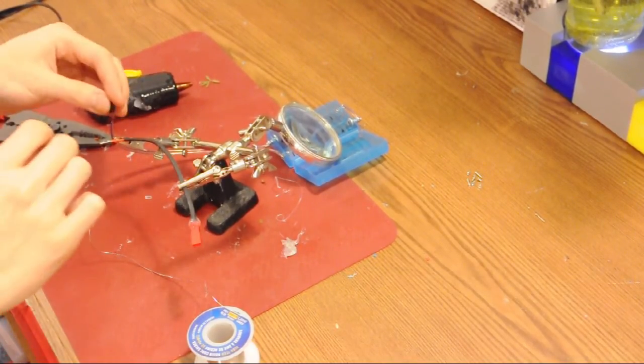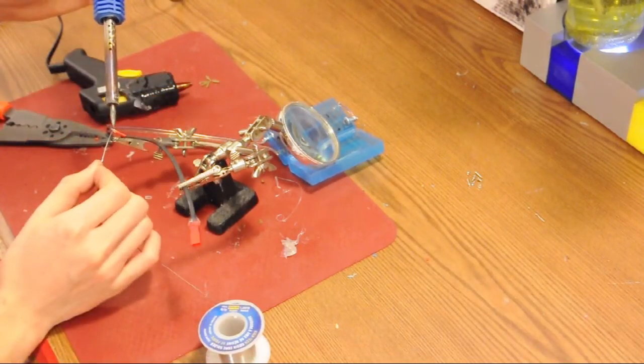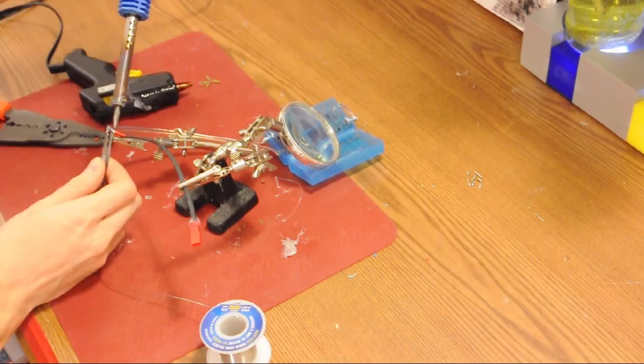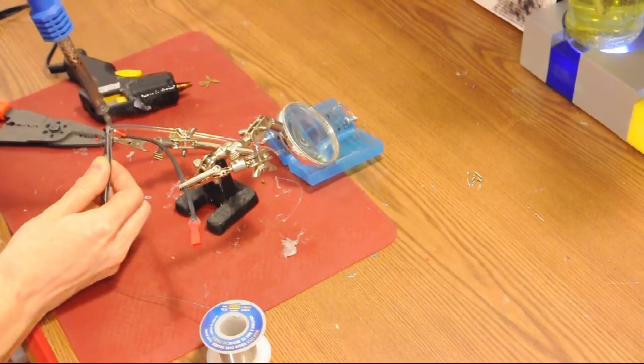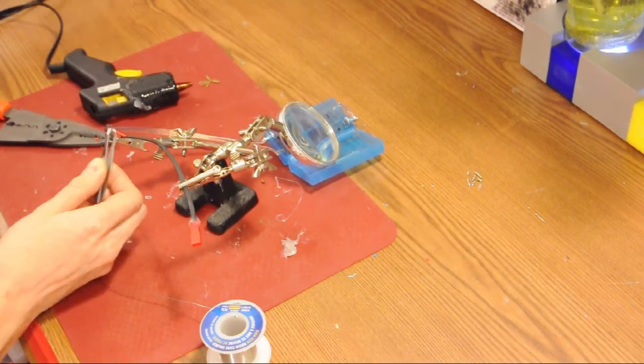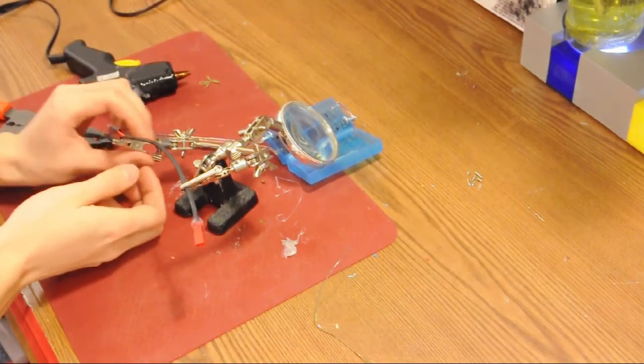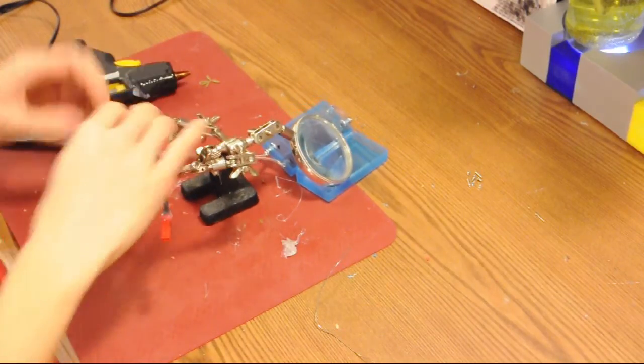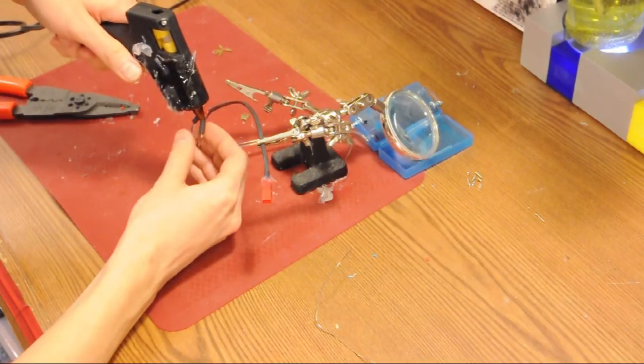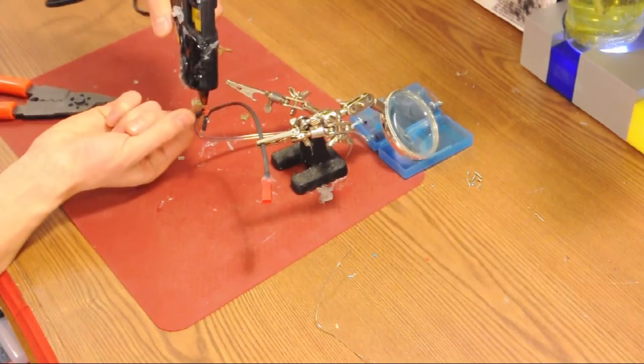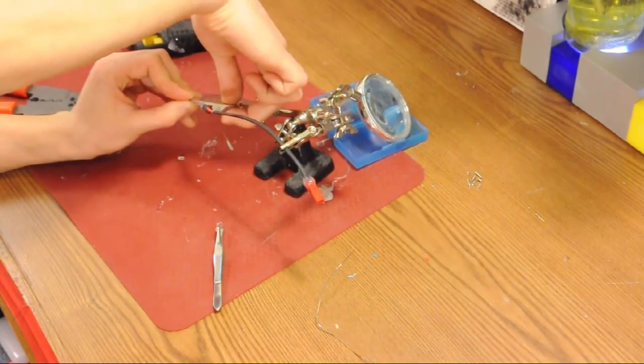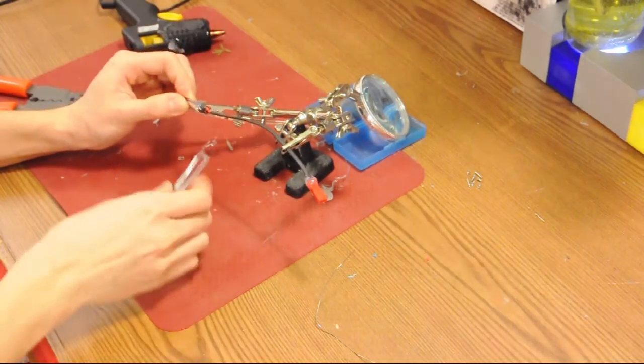Now, we will slide on our heat shrink over our solder points, and we'll fill it full of hot glue. The hot glue provides a lot of strength as well as insulation. It's easy to work with, it's non-toxic, and it's cheap.